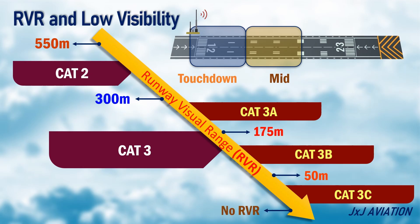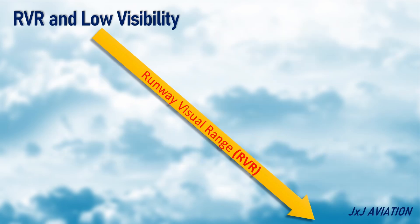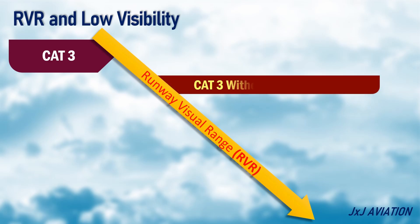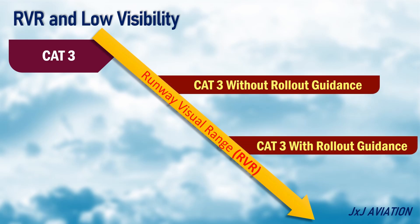For CAT-3 operations, touchdown, mid, and rollout zone RVRs should be reported. Recently, CAT-3 operations have been categorized as CAT-3 without rollout guidance and CAT-3 with rollout guidance. The lowest RVR for CAT-3 without rollout guidance is 175 meters, and the lowest RVR for CAT-3 with rollout guidance is 50 meters.